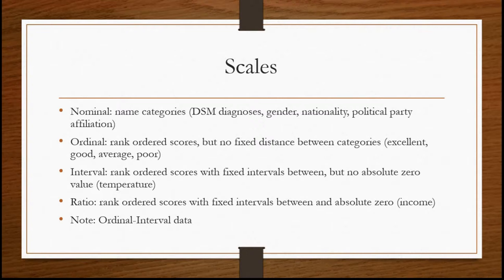One note: in psychological measurement and assessment, we often use what we call ordinal-interval data. A Likert scale in many ways is an ordinal scale — it has people assign values like strongly agree, agree, unsure, disagree, strongly disagree. The problem is we can't do much with that statistically, so a lot of times we assign an interval scale to the Likert scale, giving a one to strongly disagree, a two to disagree, et cetera. This is really ordinal data, but for statistical purposes we treat it as interval data. There's some debate among statisticians about this, but in psychological measurement we often do it anyway.